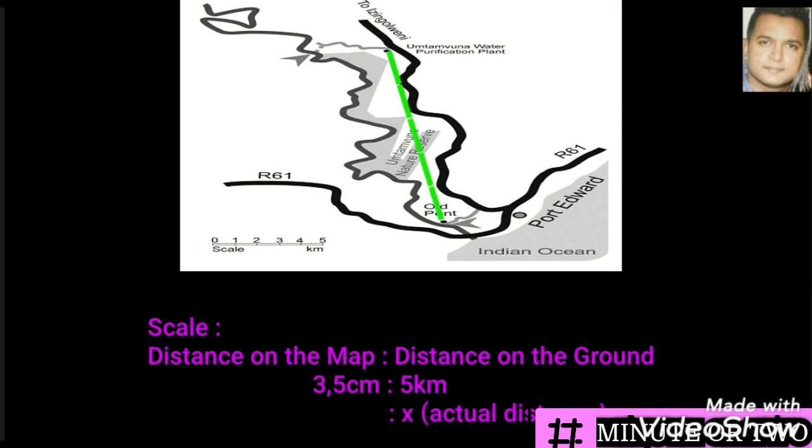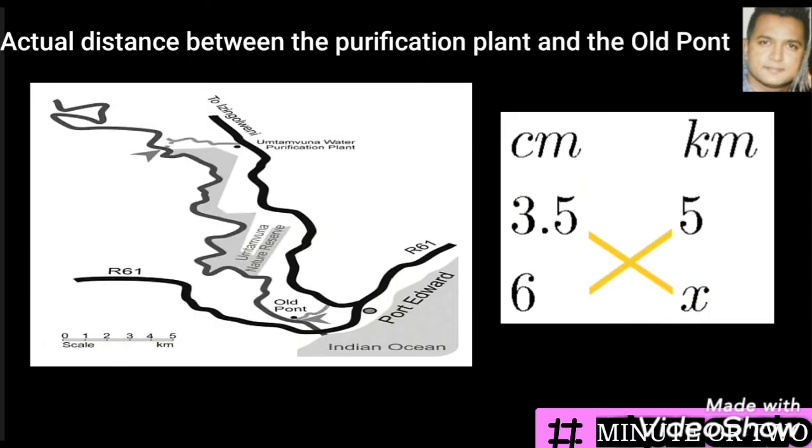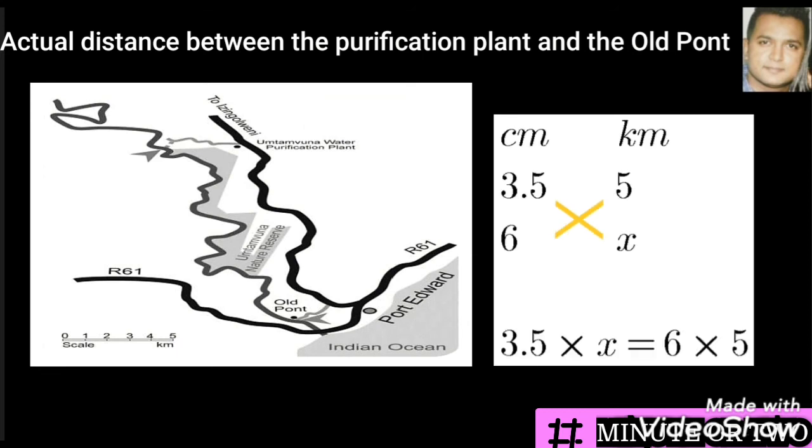Measuring the distance on the map as indicated by the green line, we arrive at 6 centimeters. Now we indicate our 6 centimeters on the side where it states distance on the map. We have two units of measure, the centimeter and the kilometer, and I put them in their respective columns. Keep in mind that our final answer will be in kilometers. Cross multiply: we get x times 3.5 and 6 times 5.